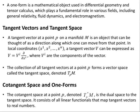By contrasting them, you can see it increases understanding of what these objects are. So let's start with a tangent vector. A tangent vector at a point p on a manifold M is an object that can be thought of as a direction along which one can move from that point.